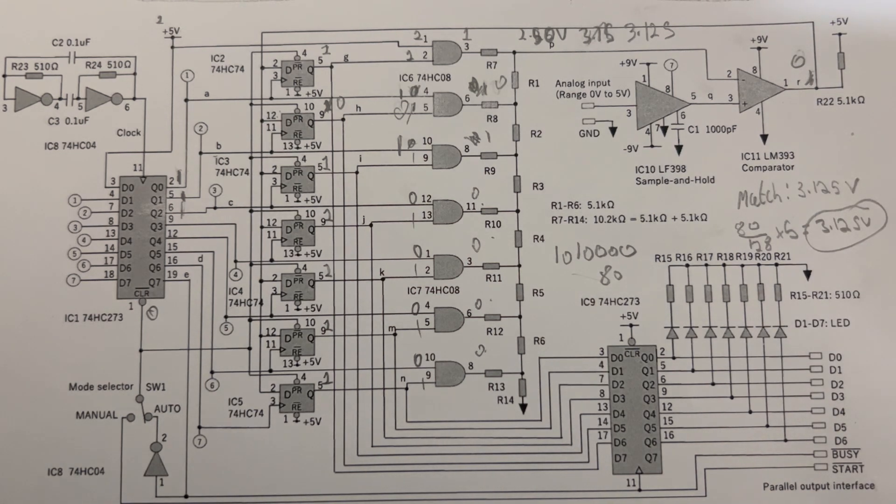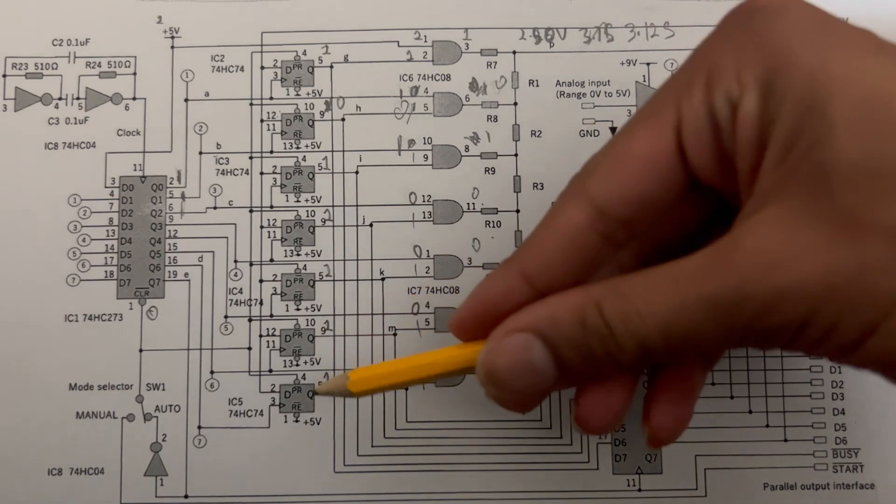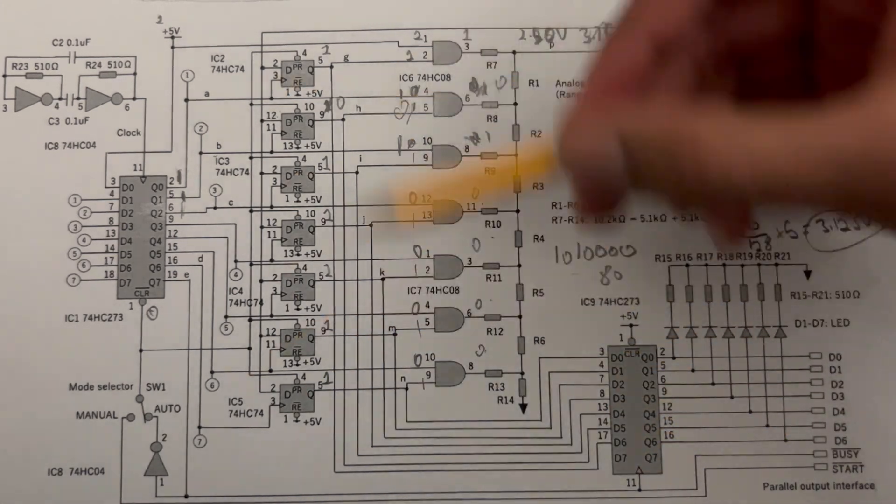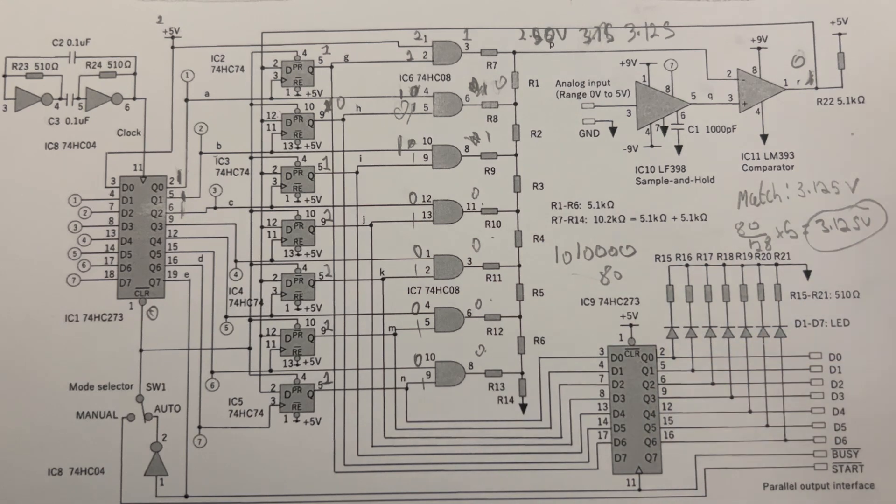Finally, in the final tick, we collect the data from the successive approximation register and input them into another 74HC273, such that it can be displayed via LEDs.